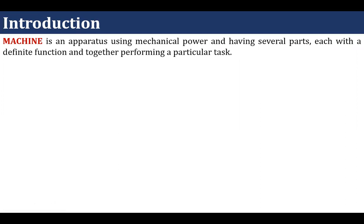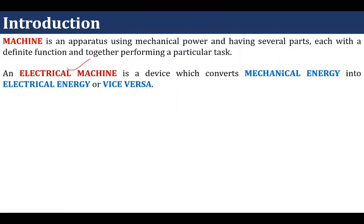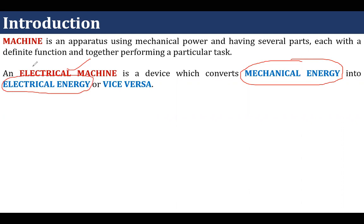So, a mechanical system which is doing a particular task — that is a machine. Whereas an electrical machine is a device which converts mechanical energy into electrical energy, or vice versa. With the help of an electrical machine, we convert mechanical energy into electrical energy and also we can convert electrical energy into mechanical energy. Such machines are known as electrical machines.